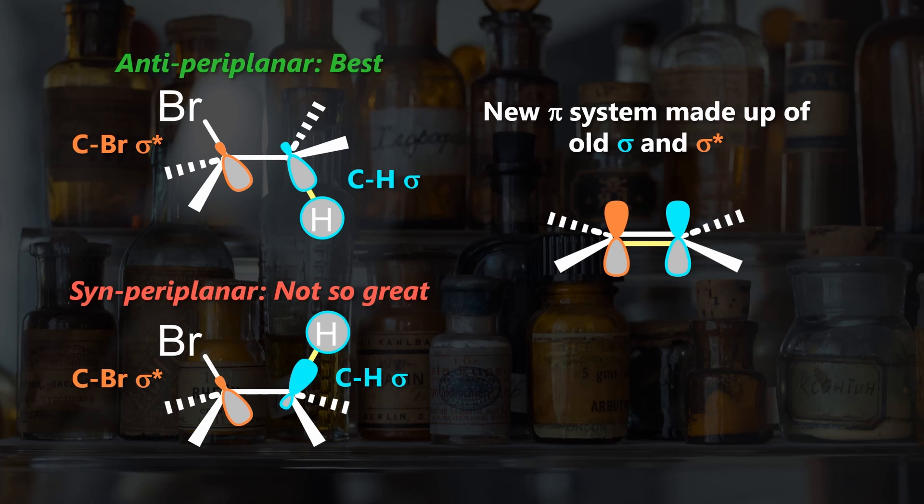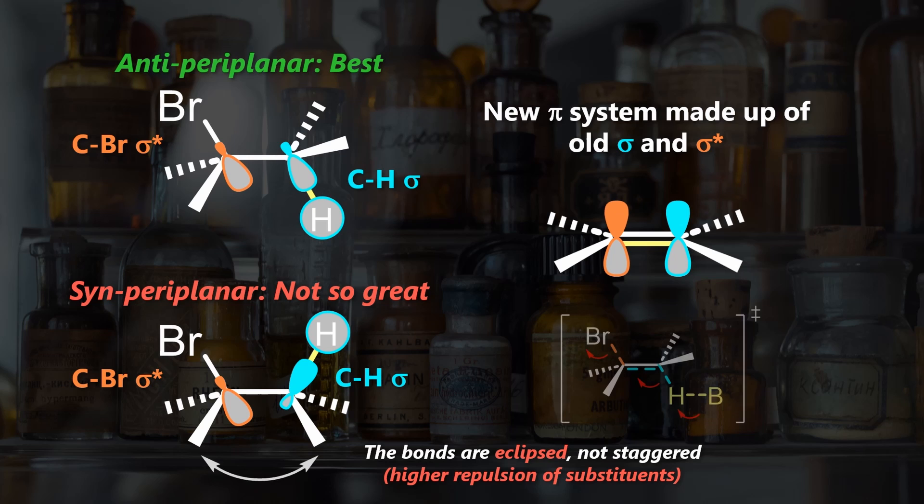Such syn conformations are also energetically disfavored due to eclipsing bonds, so we generally ignore them in favor of staggered ones in the E2 reaction. Based on the orbital alignment, we have a bimolecular concerted transition state just like in the SN2 substitution, and we have no intermediates as opposed to the E1 elimination.